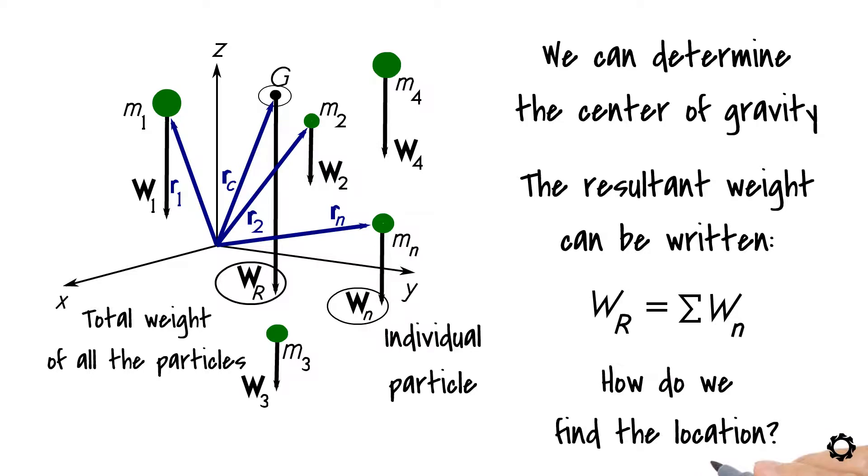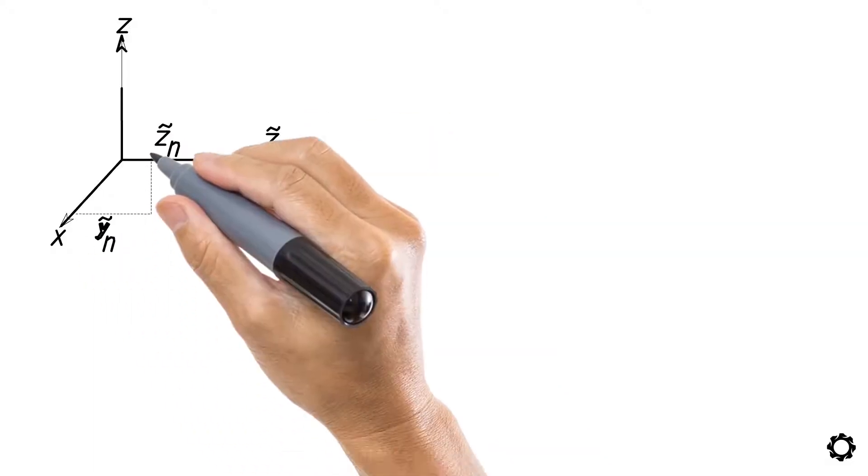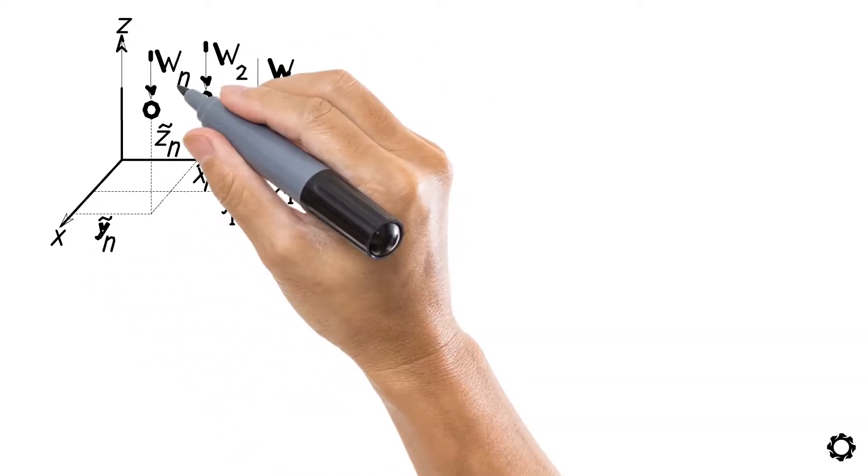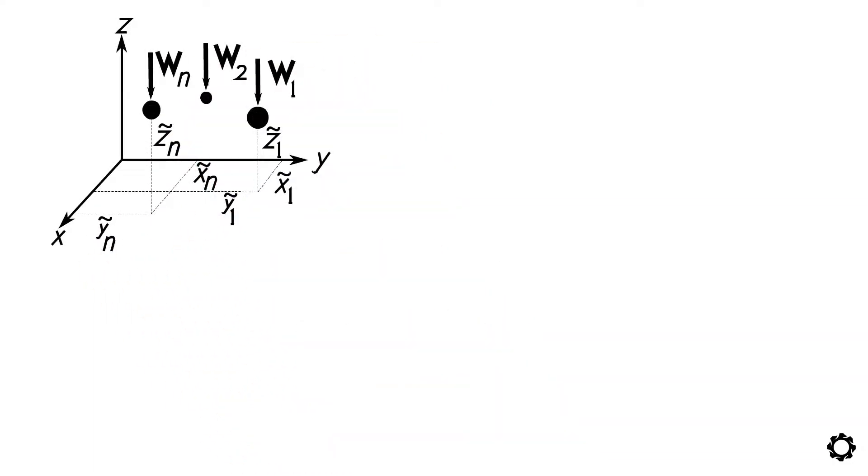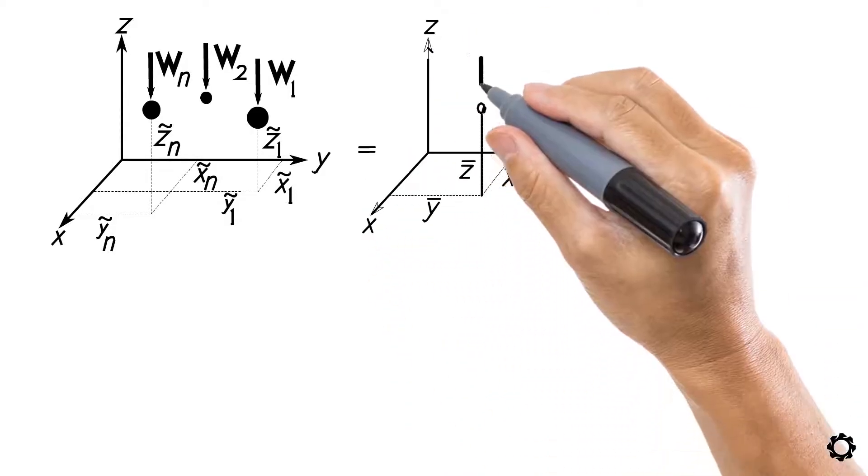How do we find the location of the center of gravity then? The way we can solve that is by considering the sum of moments of the weights of all particles about the x, y, and z axis, which is also equal to the moment of the resultant weight about these axes.